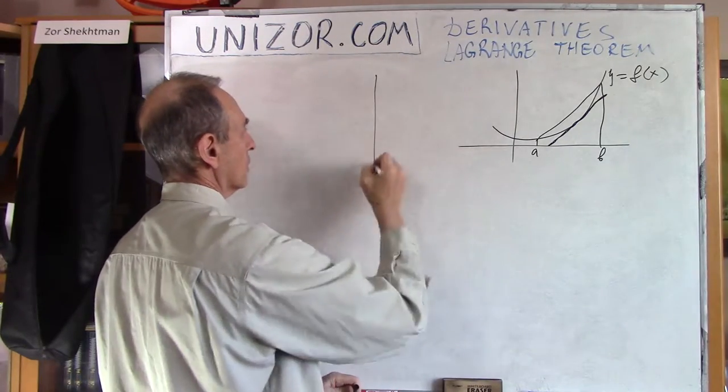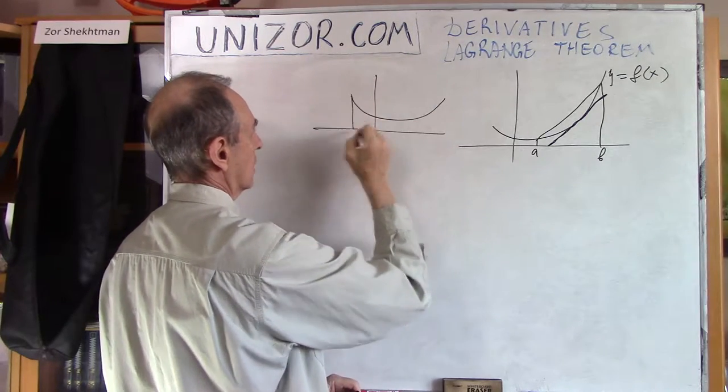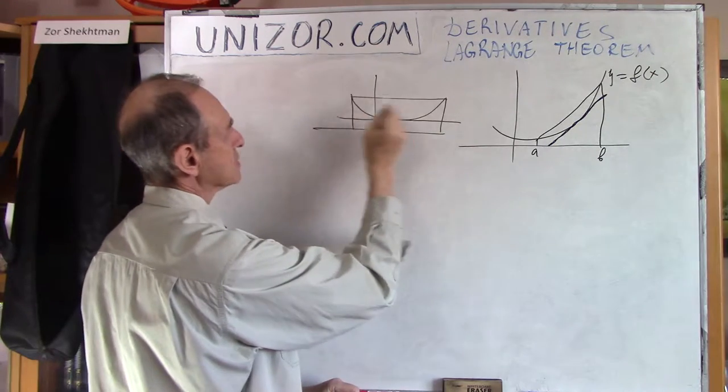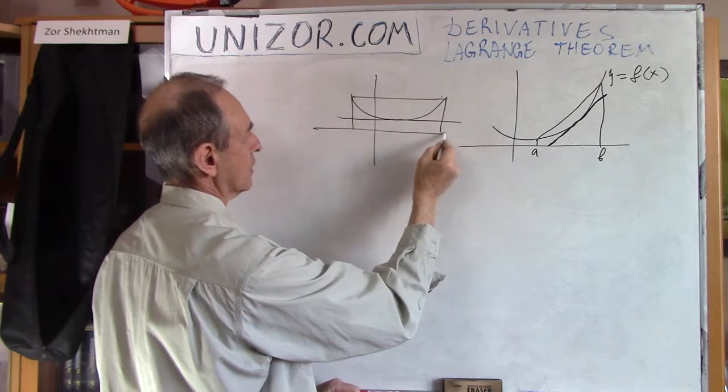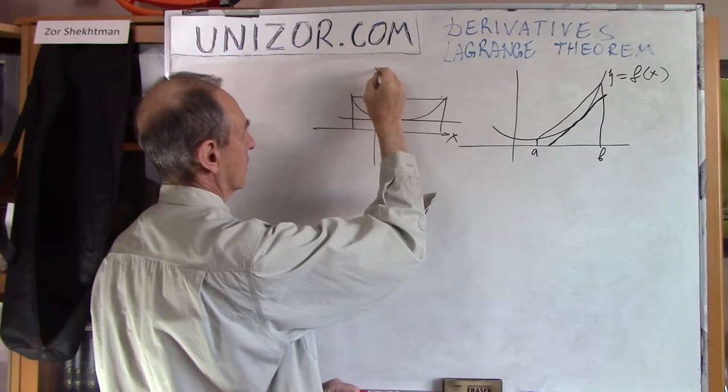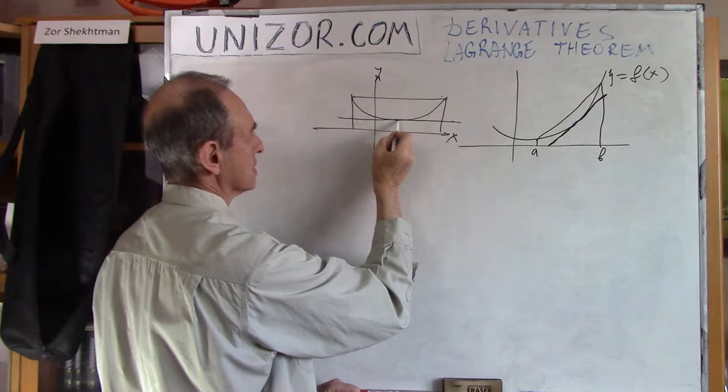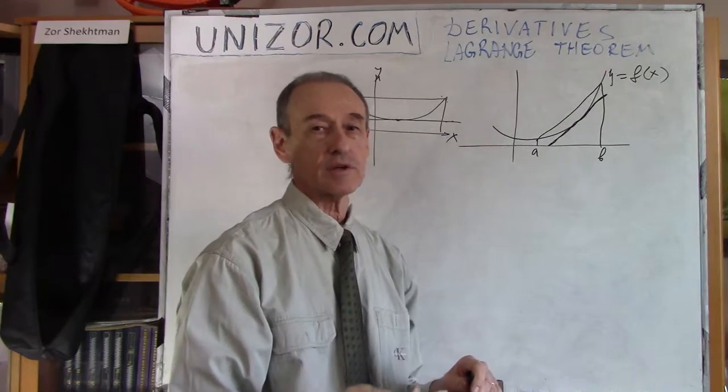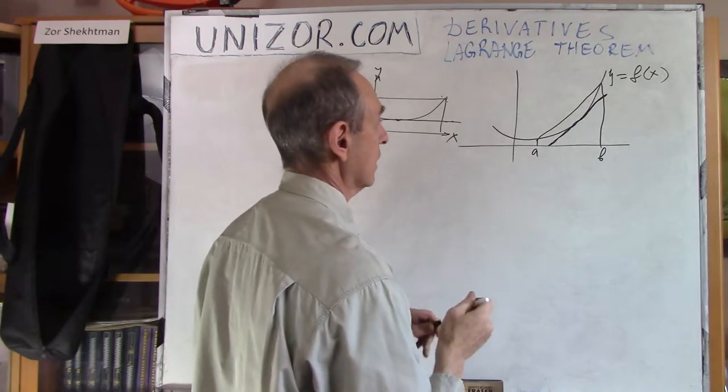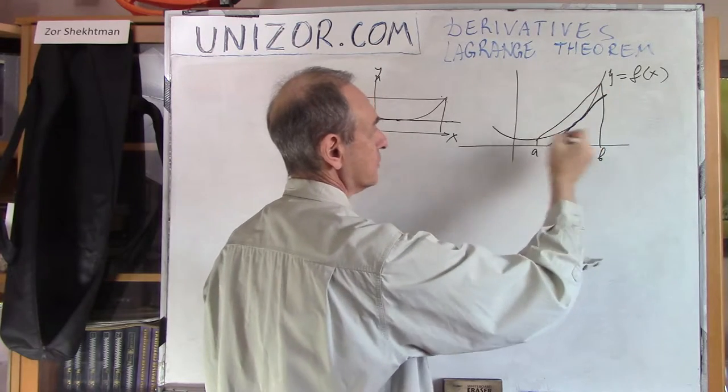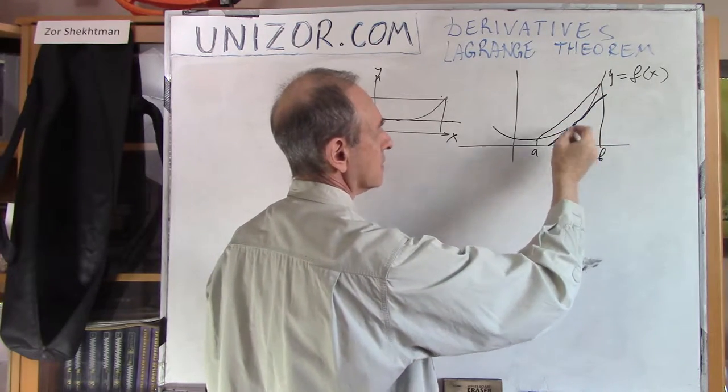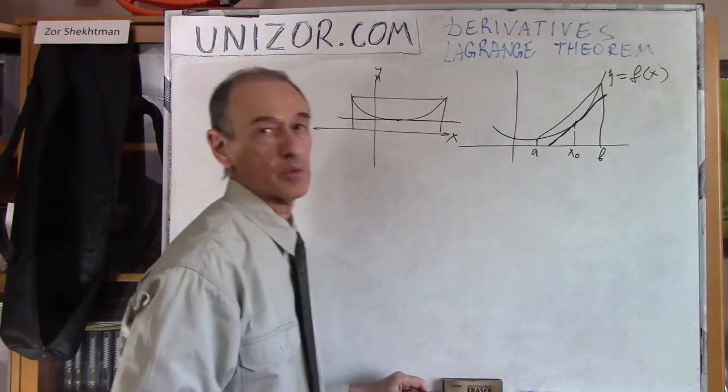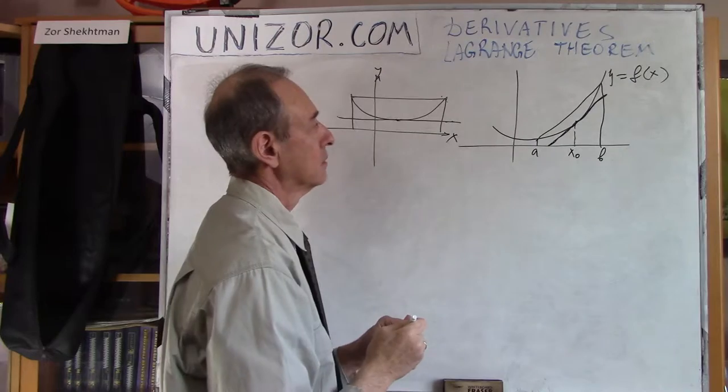Let me again draw a picture with Rolle's theorem. If the values at both ends are the same, then this line is parallel to this one, to the axis, right? And the horizontal tangential line, existence of this, means that it's parallel to this one. In this case, in the case of Lagrange theorem, we are talking about relatively the same thing. If you have a function which has different values at A and B, then there is still some point in between where tangential line is parallel to this chord, which connects the ends of the function on both ends.